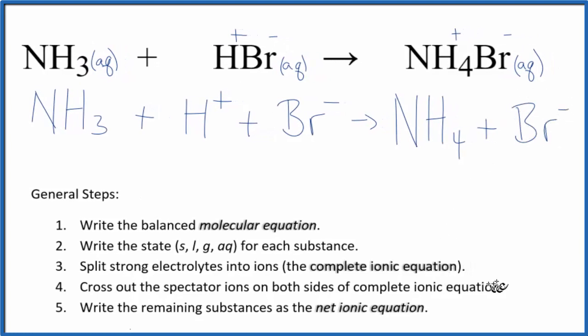And that gives us the complete ionic equation. Now we can cross out spectator ions. They're on both sides of that complete ionic equation. The only thing that's on both sides is the bromide ion. We have it here and here. Let's just cross that out.